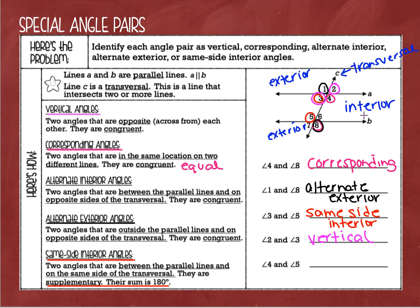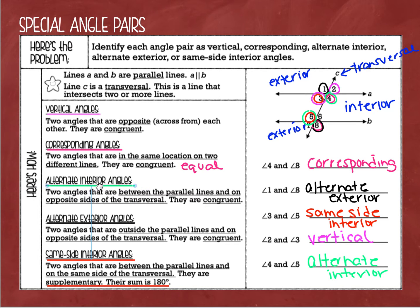The last ones are angles 4 and 5. Now 4 and 5 are both interior angles — they're between the parallel lines. However, they are on opposite sides of the transversal. So these are called alternate interior angles. These are two angles in between the parallel lines on opposite sides of the transversal. Angle 4 was on the right side, 5 was on the left side — they are congruent.